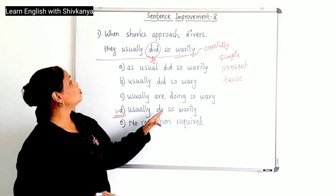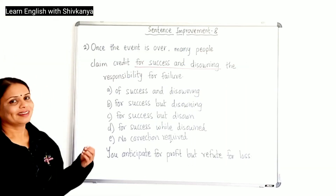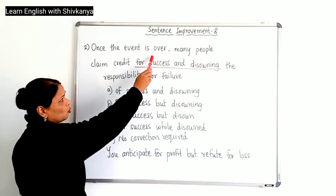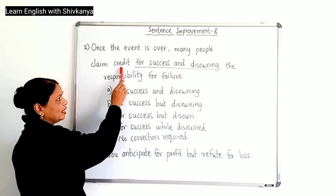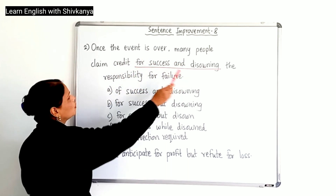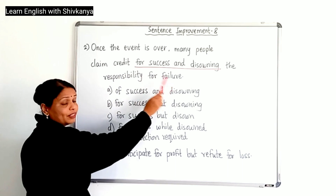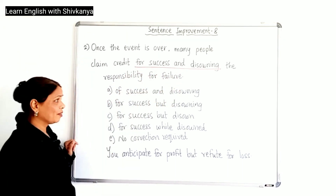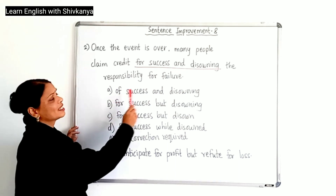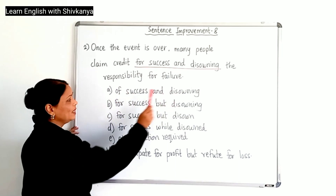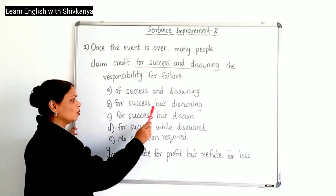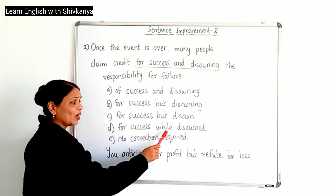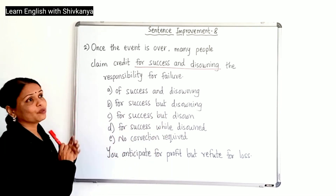The correct option is 'usually do so verily.' The second sentence: Once the event is over, many people claim credit for success and disowning the responsibility for failure. The wrong phrase is 'for success and disowning.' The options are: of success and disowning, for success but disowning, for success but disown, for success while disowned, and no correction required.